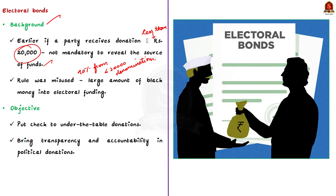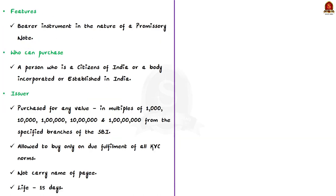According to the union government, the electoral bond scheme was brought up to put a check on decades-old under-the-table donations and to bring transparency and accountability in the system of political donations in the country. An electoral bond is a bearer instrument in the nature of a promissory note, which is also an interest-free banking instrument.